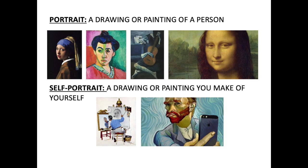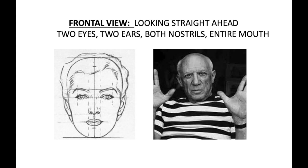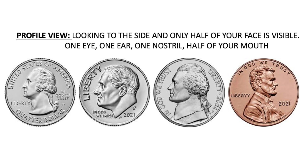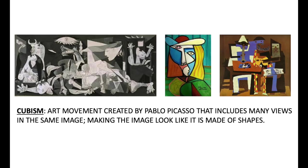To review: a portrait is a drawing or painting of a person. A self-portrait is a drawing or painting you make of yourself. A frontal view is when you are looking straight ahead — you can see two eyes, two ears, both nostrils, and an entire mouth. A profile view is when a person is looking to the side and only half of their face is visible — you will only see one eye, one ear, one nostril, and half of the mouth. Cubism is the art movement created by Pablo Picasso that includes many views of the same image, making the image look like it's made of shapes.